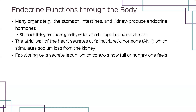Continuing research into the endocrine system has shown that nearly every organ and system has an endocrine function. Tissues in the kidneys, stomach, intestines, and other organs secrete hormones that regulate a variety of essential human functions.